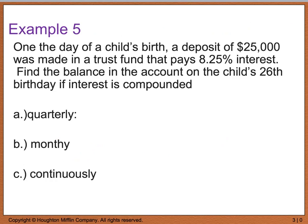So let's go ahead and look at an example of this. It says one, or on the day, sorry, that should read on. So on the day of a child's birth, a deposit of $25,000 was made in a trust fund that pays eight and a quarter percent interest. We want to find the balance in the account on the child's 26th birthday if the interest is compounded in one of the three ways. Well, I want to look at it being compounded quarterly. So because I'm using a quarterly compound, I need to use the number of compoundings per year formula, which is A equals, and I'm going to write this up at the top, A equals P times the quantity of one plus R divided by N raised to the N T power.